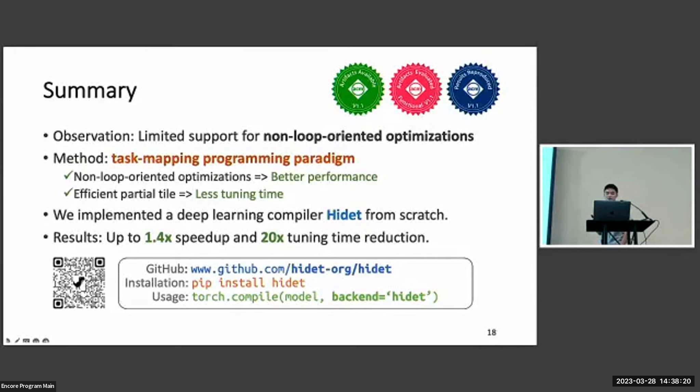We have open-sourced our code on GitHub and have an integration in the PyTorch frontend so that you can directly use our tool by a single line of code in your script. Hidet has already been used in practice to optimize some large language model kernels. And now I'd like to answer any questions here. Thank you.